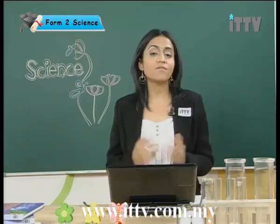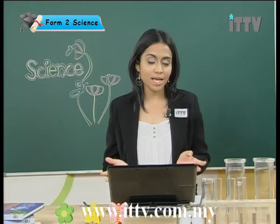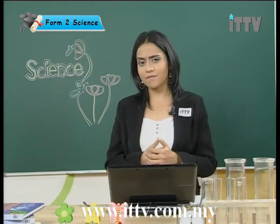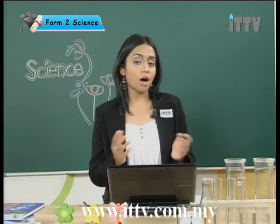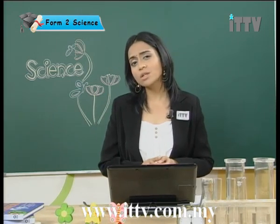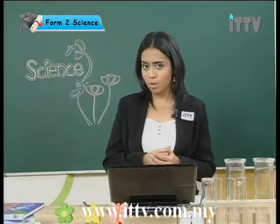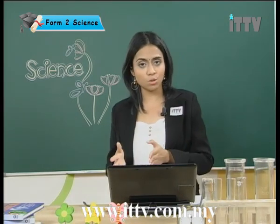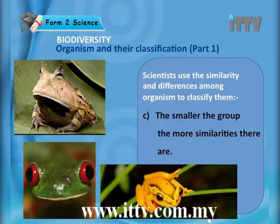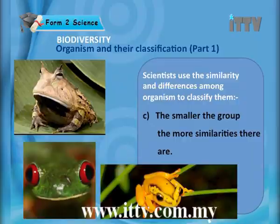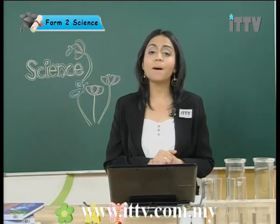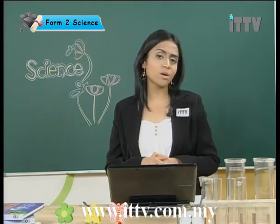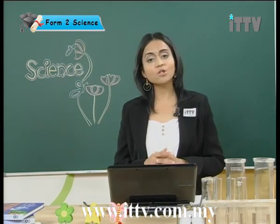Each group is further divided into smaller and even smaller groups. For example, organisms which have wings can be further classified by their feathers — large feathers, blue feathers, or small white feathers — spreading them into smaller groups. The smaller the group, the more similarities there are. Scientists classify different types of living organisms by grouping them according to their species.